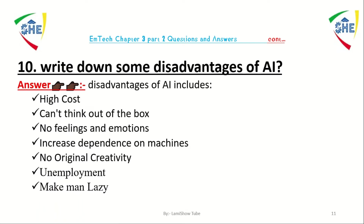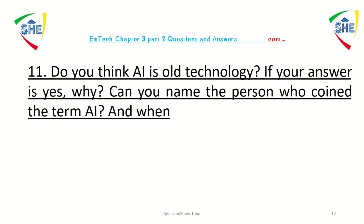Question number ten: write down some disadvantages of artificial intelligence. Some disadvantages include: high cost, artificial intelligence can't think out of the box, artificial intelligence has no feeling and emotion, increased dependency on machines, no original creativity, unemployment or making a person jobless, and making people lazy.